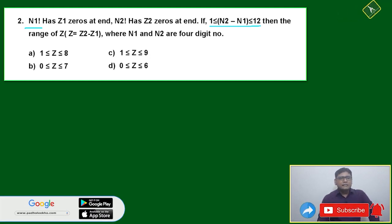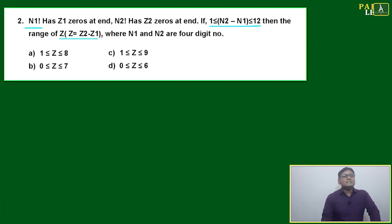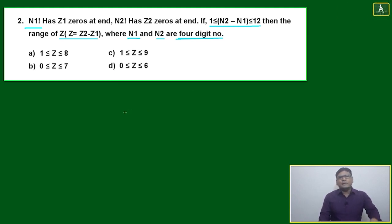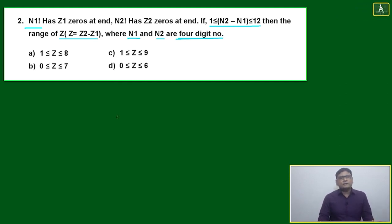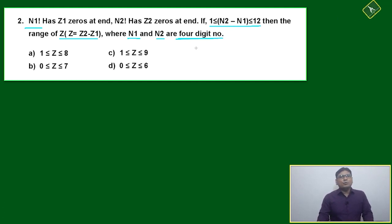The range of z2 minus z1 needs to be found, where n1 and n2 are 4-digit numbers. After reading the question once you will not immediately know what to do — nothing concrete is given. The only clue is that n2 minus n1 is between 1 and 12, and that n1 and n2 are 4-digit numbers.